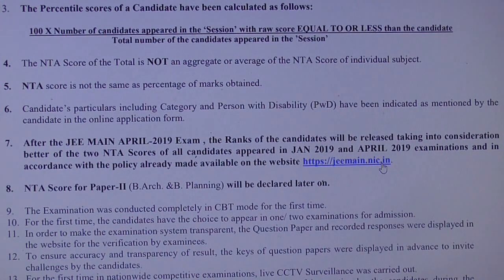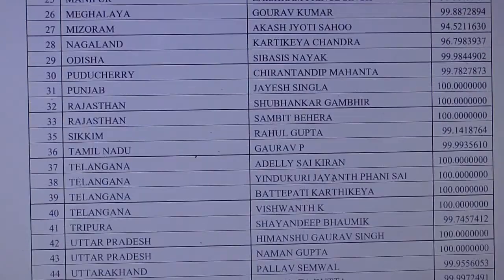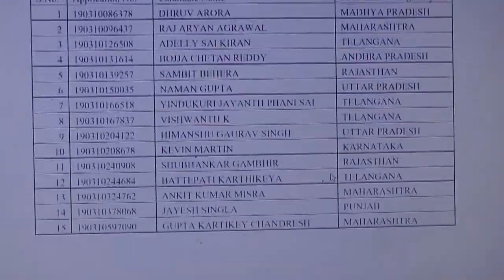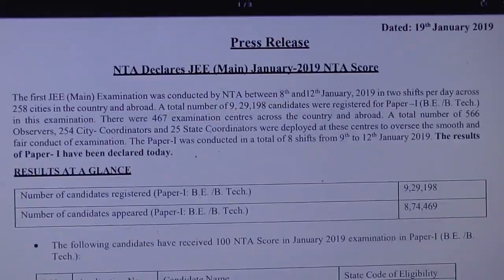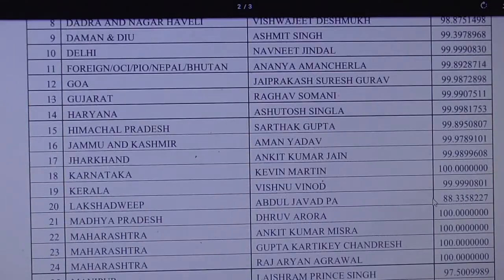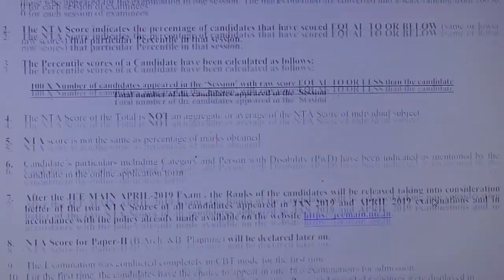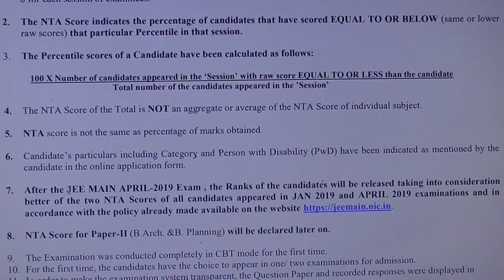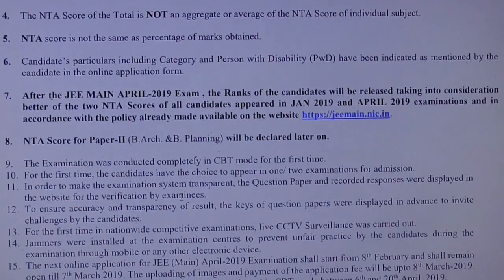We do have a formula for calculating rank: 100 minus your percentile, multiplied by the number of appeared students (8,74,469), divided by 100. But this is not necessary right now, because the final rank will be considered only after the JEE Main April 2019 exam.